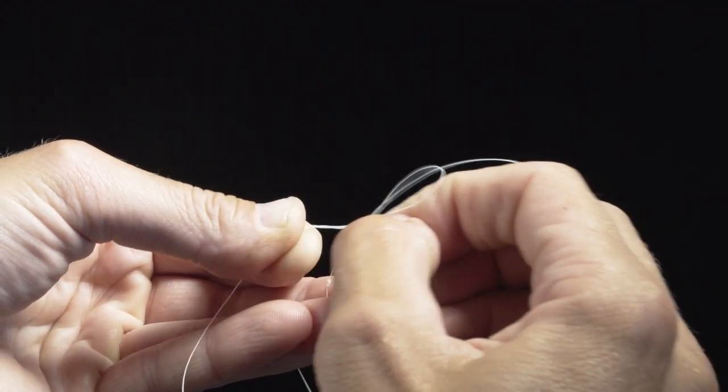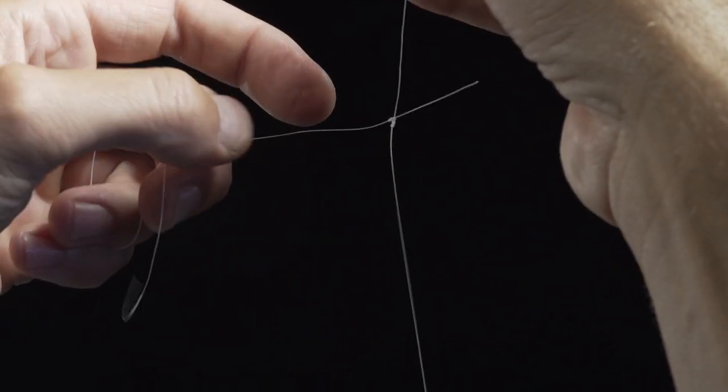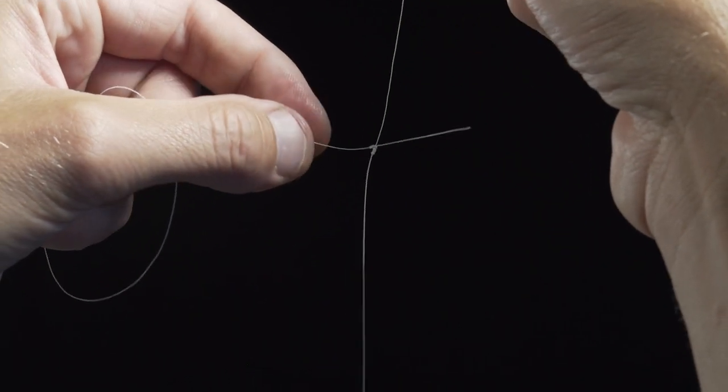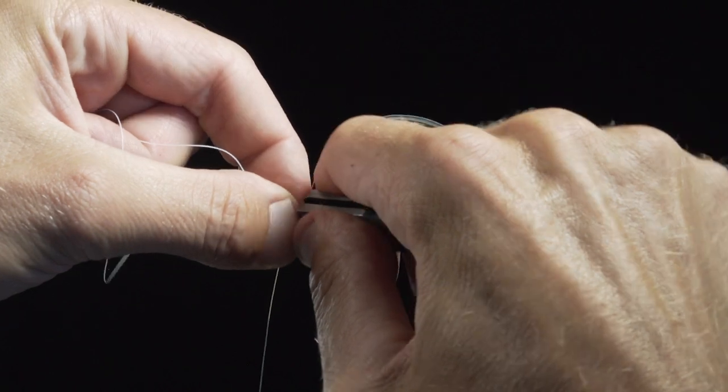Next, cinch the clinch, sliding it down onto the stopper knot. For the pair of nippers, cut the short tag flush with the main leader, giving you a five to six inch tag end.